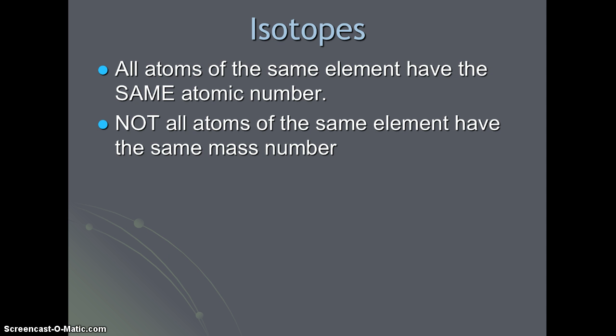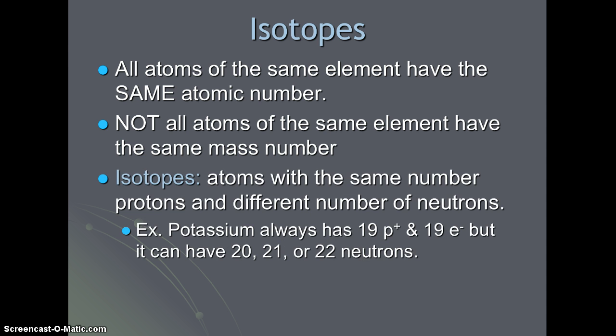All atoms of the same element have the same atomic number. That's what identifies the element. But not all atoms of the same element have the same mass number. So again, Dalton was incorrect that all atoms of an element are identical. We call isotopes atoms with the same number of protons but a different number of neutrons.